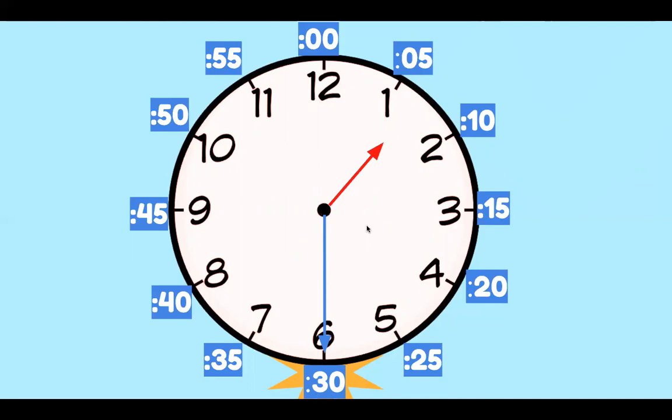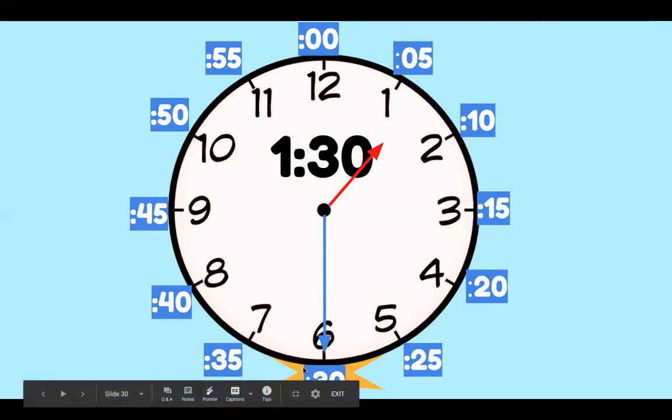Where is that hour hand pointing? Write it down on your whiteboard. It is 1:30. So you can see here our hour hand isn't perfectly on 1, but it's not to 2 yet either. So it's still the hour of 1 o'clock, just 30 minutes have passed.